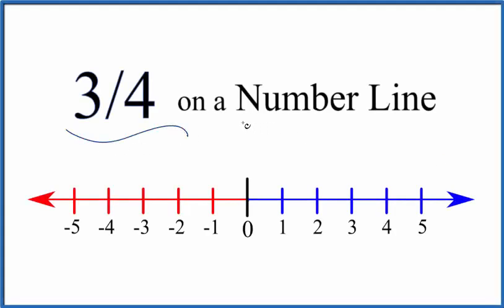Let's find 3 fourths on a number line. Here's how we do it. These numbers are negative on this side here, positive over here with 0 in the center.